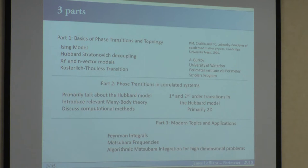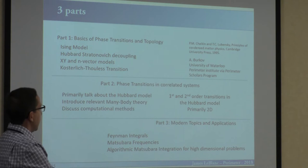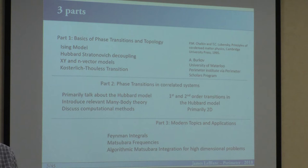Once we do that first part — which I consider a little bit the boring part, though if you haven't seen the content it won't be as boring — I'll go on to the second part: phase transitions in correlated systems. Primarily I'll talk about the Hubbard model, since that's what I've been working on for a number of years. I'll start with a basic introduction to many-body theory. My goal is to discuss first and second order transitions in the 2D Hubbard model, then extensions of the Hubbard model, and then numerical methods we use to tackle that problem.